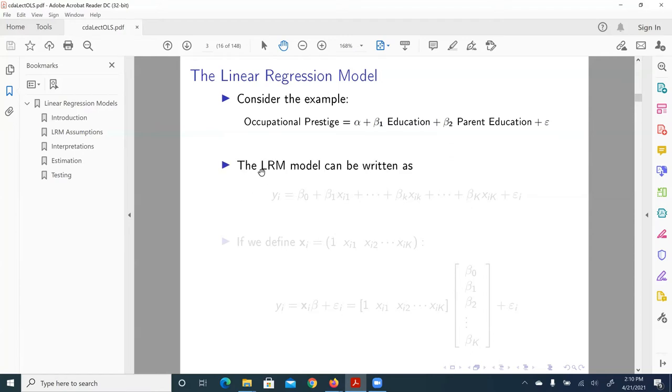And so the linear regression model can be written as yi plus beta zero. So this time we change alpha to beta zero, just to make the spelling consistent, all referring to beta. So with beta zero, that's intercept plus beta one, xi one plus da da da plus beta k, xi k plus da da da plus beta capital K, xi capital K plus epsilon i.